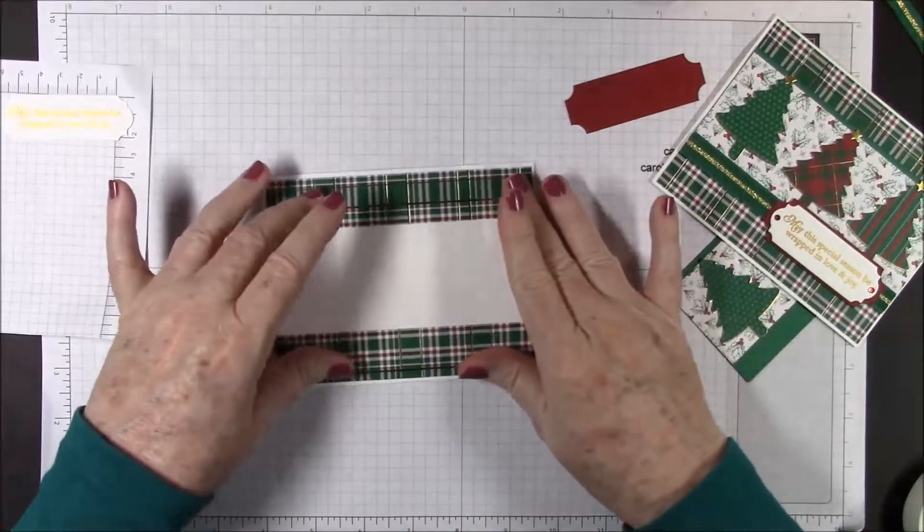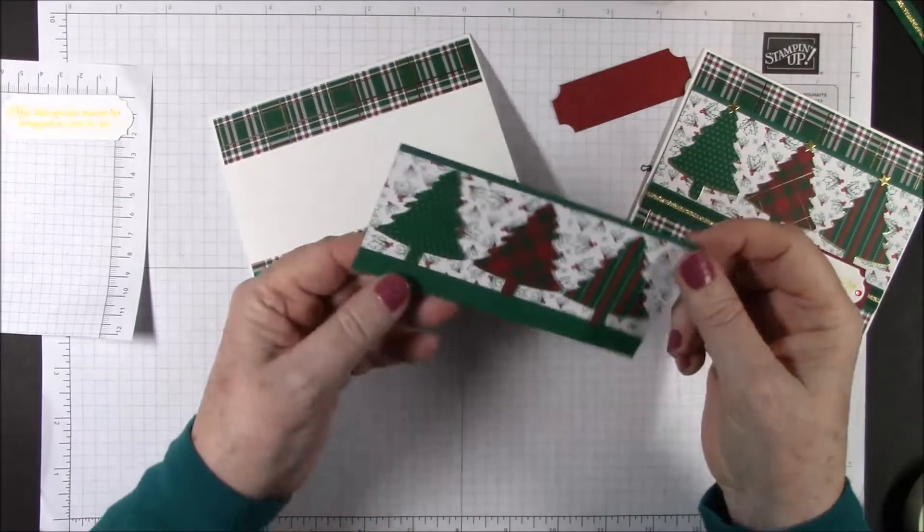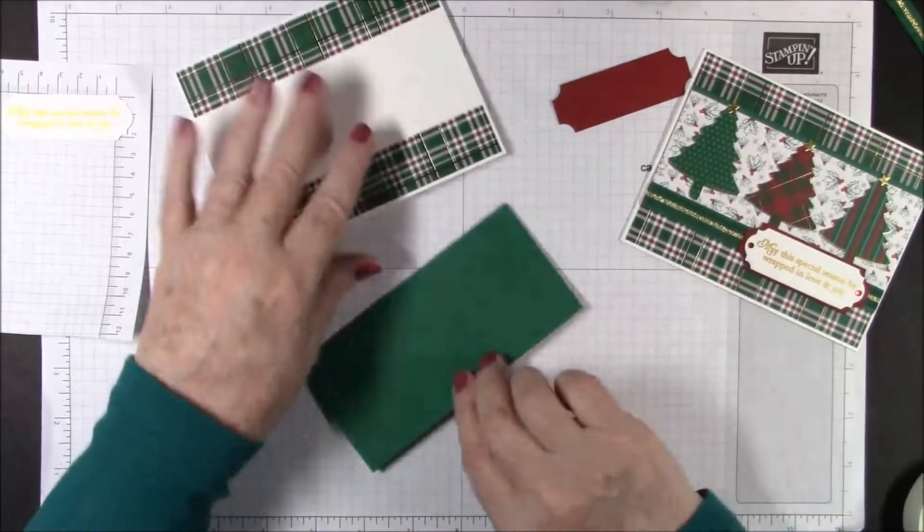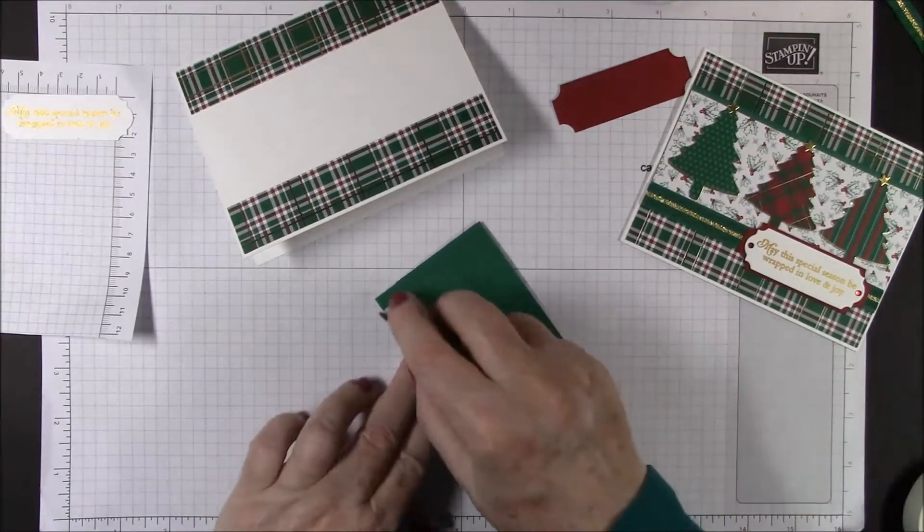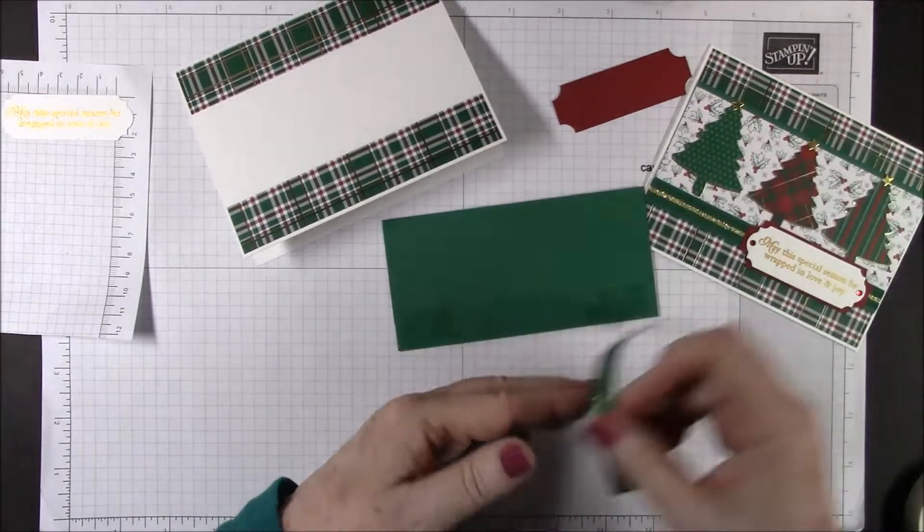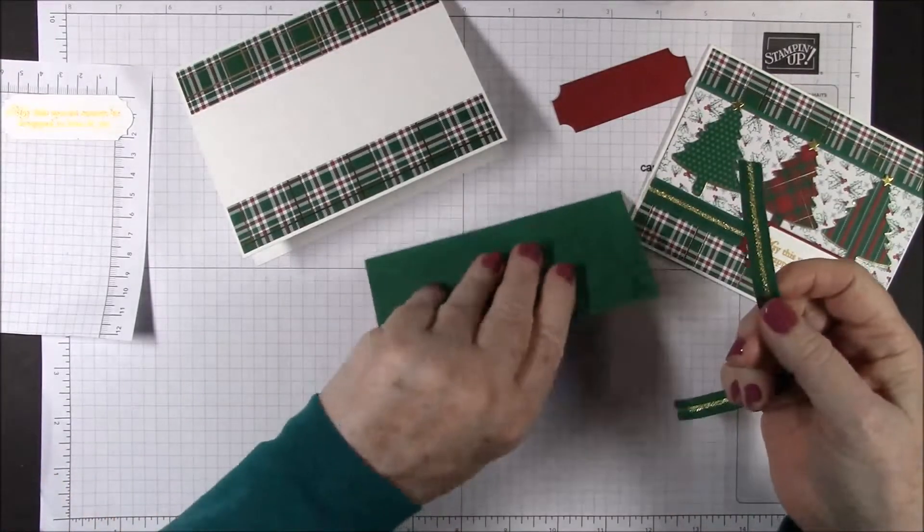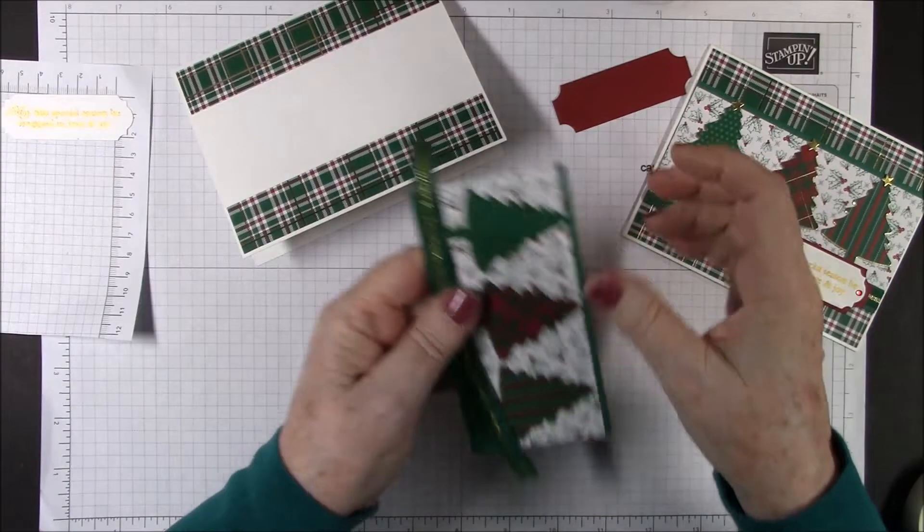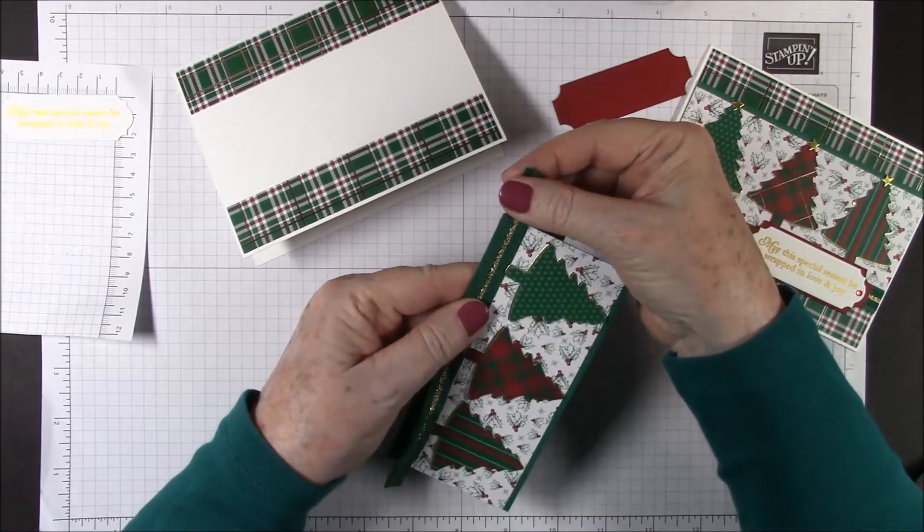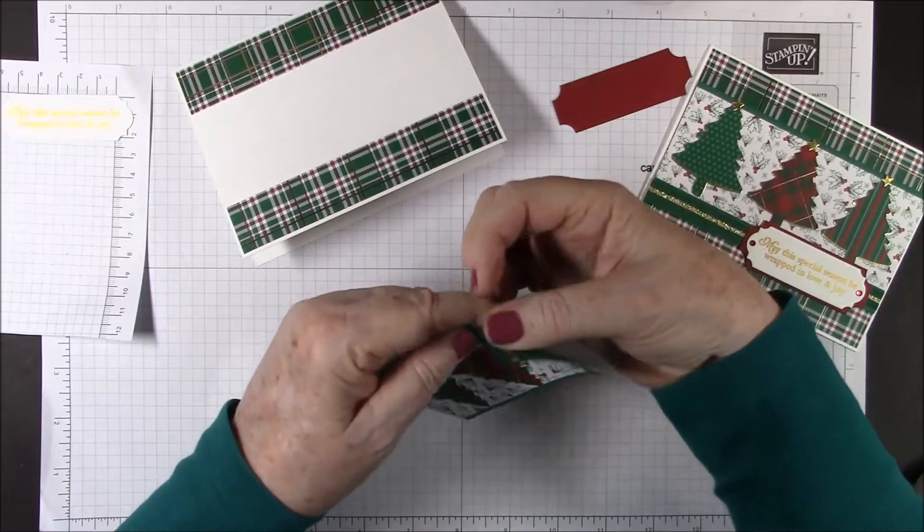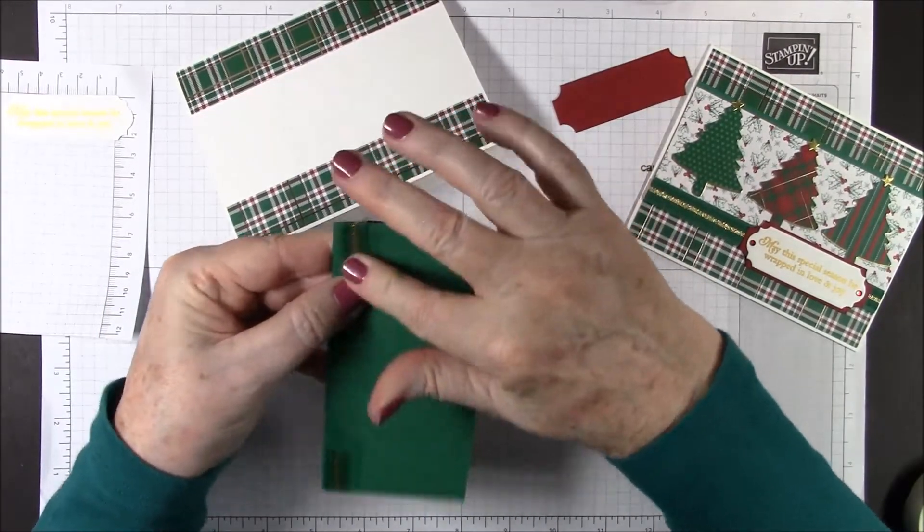We're going to bring in our card base. We're going to put these a sixteenth of an inch or even spacing all around top and bottom. Be sure to get any glue off of your fingers. Before we put this on, we've got to put our ribbon on around here down at the bottom. On the back we're going to put some snail.